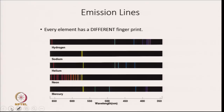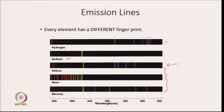The emission lines of different elements are peculiar to that element only, and hence every element has a different fingerprint. For example, hydrogen has spectral lines at specific positions quite different from sodium. Helium also has a quite different spectrum compared to hydrogen and sodium. If we look at the atomic spectra of different elements, we can figure out which element is present in that particular sample.